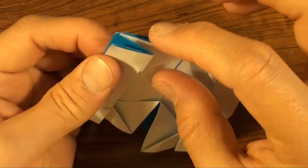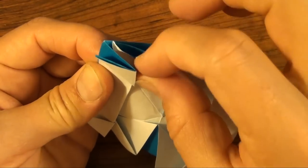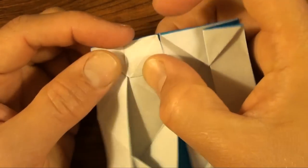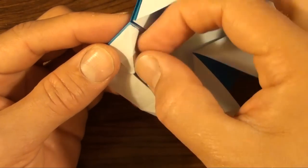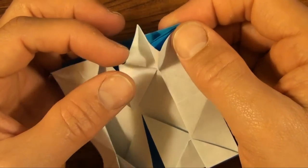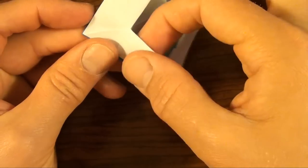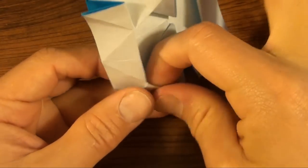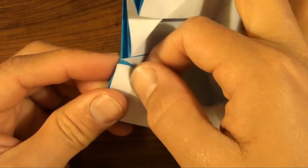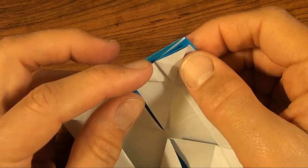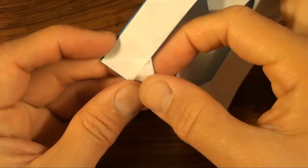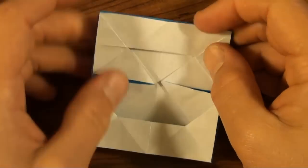Now we're going to take out these raw corners. So you have to grab hold of just the raw edge there and pull it out and flatten. And take the flap and tuck it inside. We're going to do that three more times. Pull it out and tuck it in. Third one. And last one.